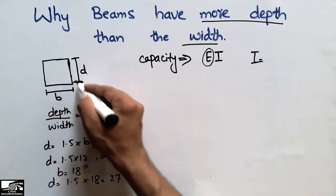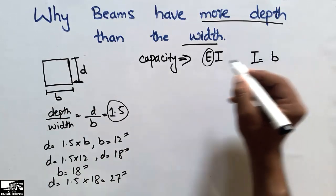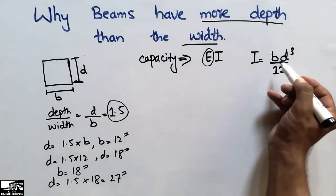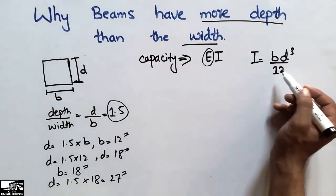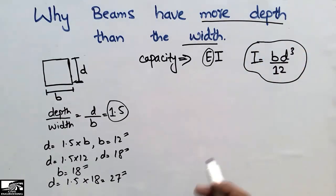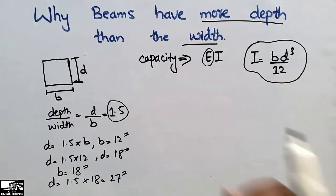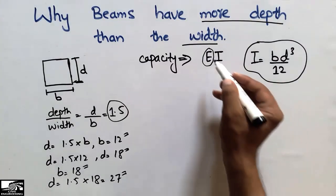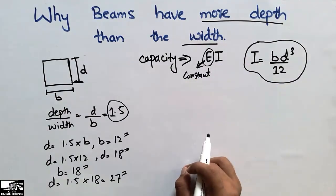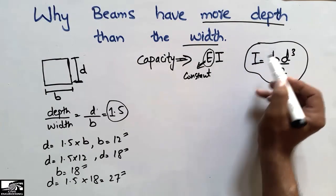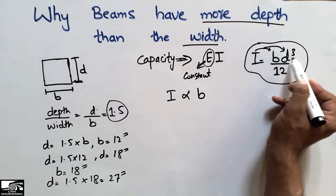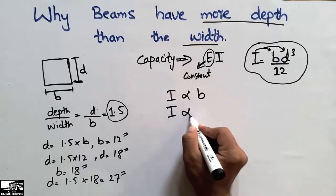For a rectangular beam, the moment of inertia is I = BD³/12, where B is the width and D is the depth. The capacity of the beam can be increased by increasing the moment of inertia. Now, since E is constant for the material used, we should play with I. We can see that the moment of inertia is directly proportional to the width B, and also directly proportional to the cube of the depth D.